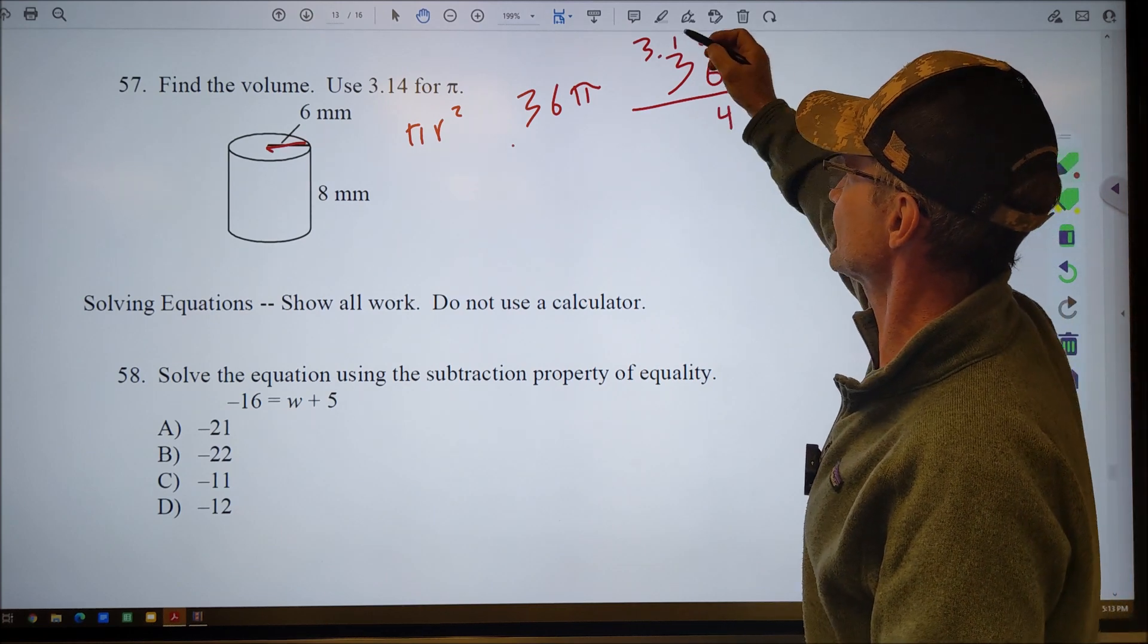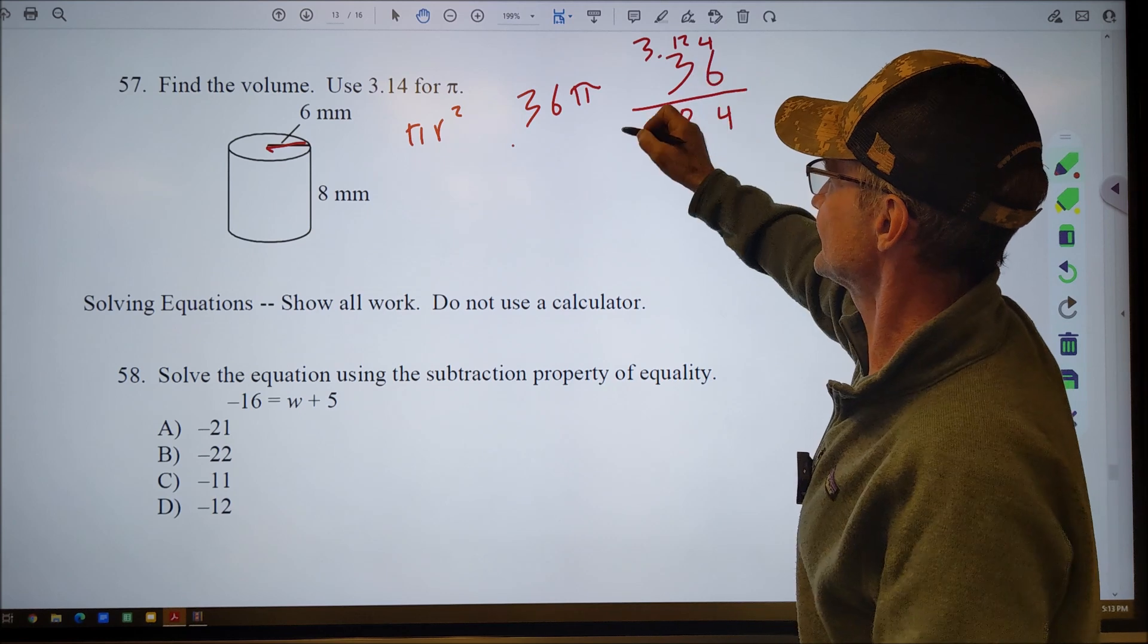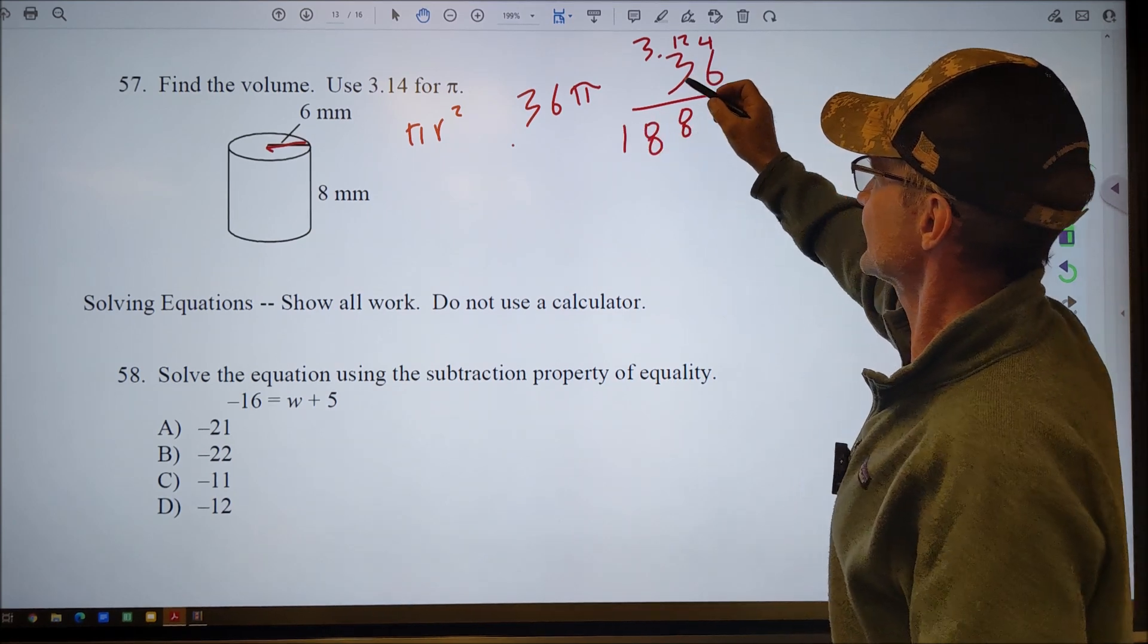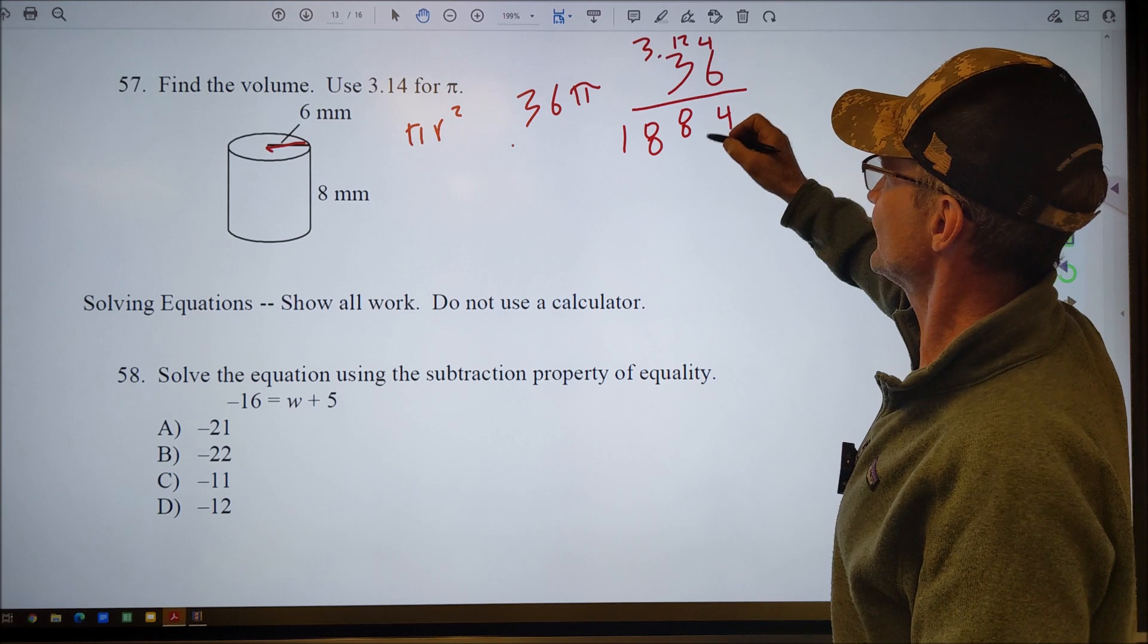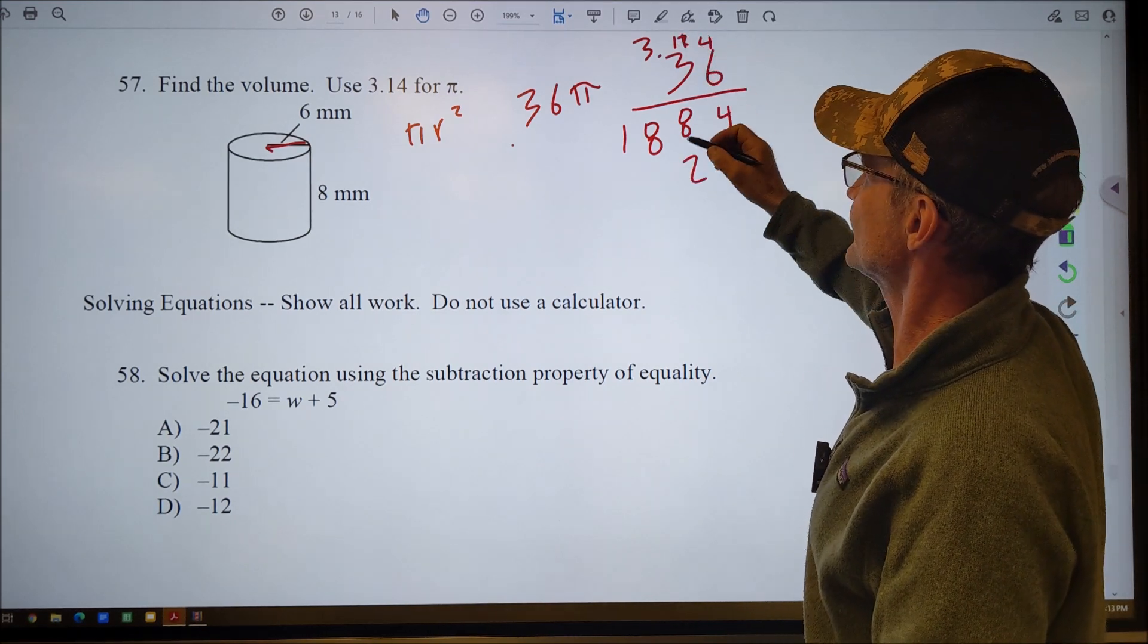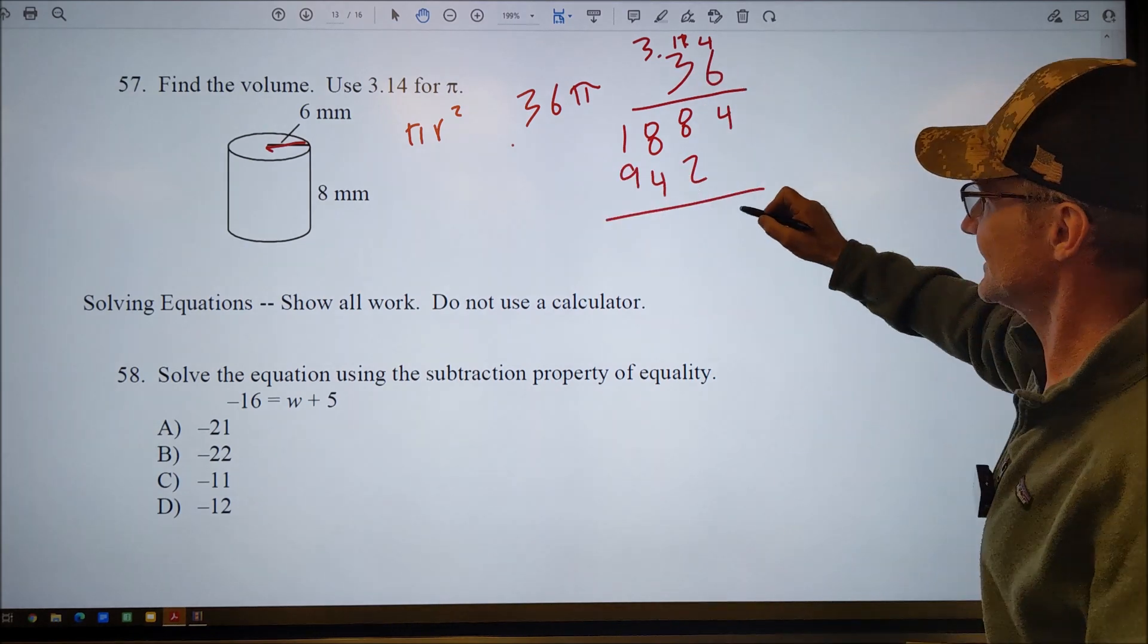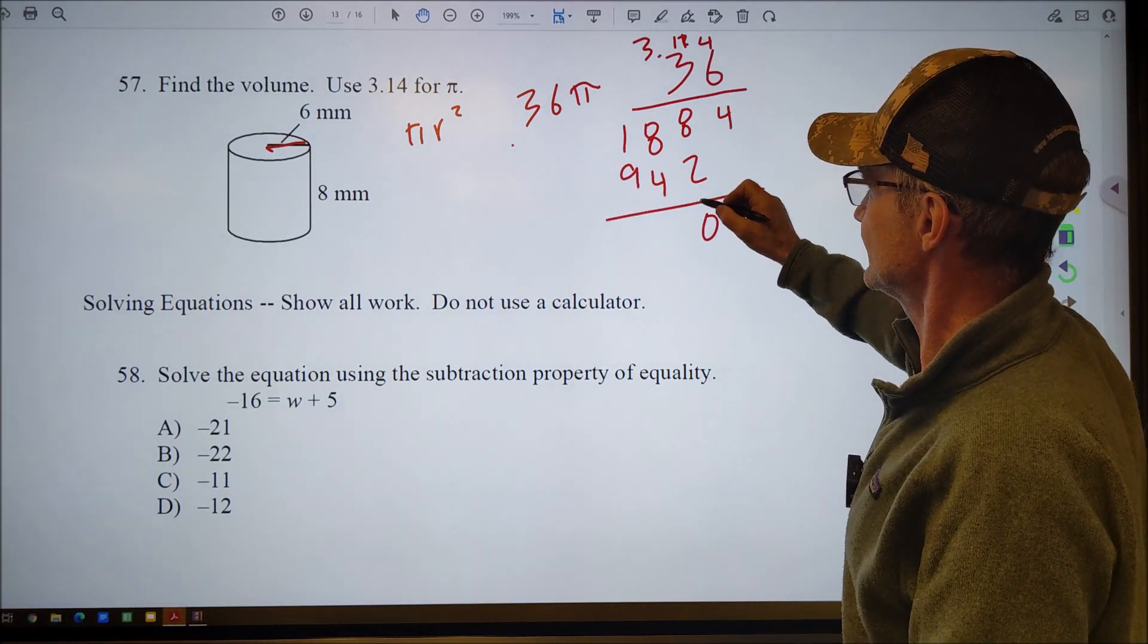6 times 4, 24. Carry the 2. 6 plus 2, 8. 6 times 3, 18. I'm going to multiply 3 by the 3. You get 3 times 4, 12. Carry the 1. 3 plus that 1, 4. 3 times 3 is 9. Adding straight down 4, 10. Carry the 1, 12, 13. Carry the 1, 10, 11.